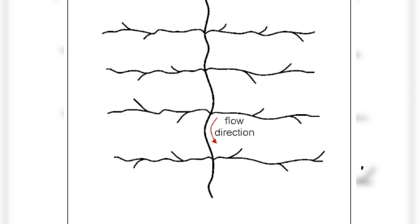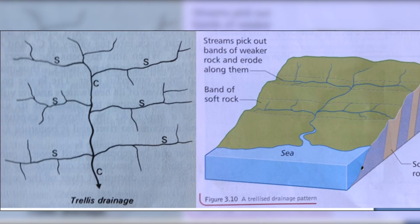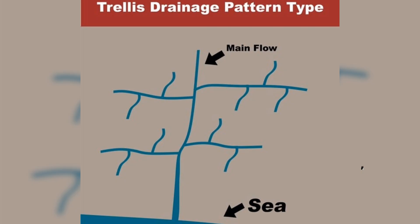The next type is the trellis pattern. The main river flows through softer rock while tributaries cut through harder rock, creating a rectangular, grid-like pattern.